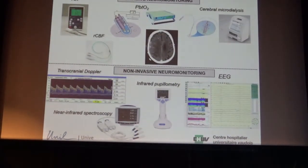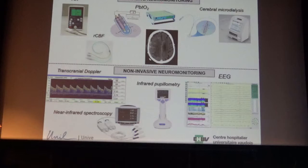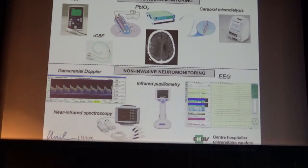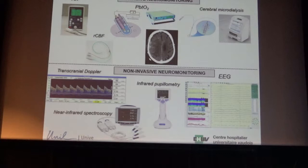Regarding monitoring, there are many tools. On the invasive neuromonitoring side, the combination of intracranial pressure and brain tissue oxygen is key for optimizing brain circulation — treating elevated ICP and optimizing brain perfusion with brain oxygen. You can also follow up with transcranial Doppler. For brain function evaluation, EEG and new tools like infrared pupilometry and near-infrared spectroscopy are available. At our center, NIRS is used primarily in patients on veno-arterial ECMO.